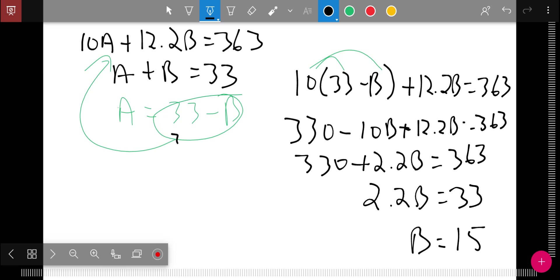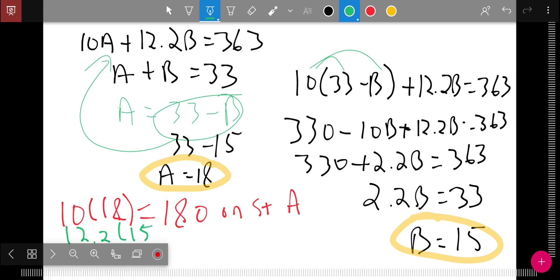I plug it in up here. 33 minus 15 means that A equals 18. So Mr. Egan bought 18 shares of stock A and 15 shares of stock B. Now the question also asked, how much money did he spend? Well, $10 for each share of A means he spent $180 on stock A. And 12.2 times 15 shares of stock B means he spent $183 on stock B. And so that is my money answer.